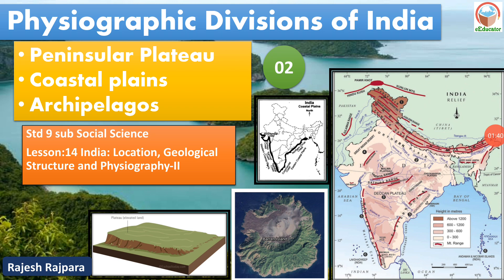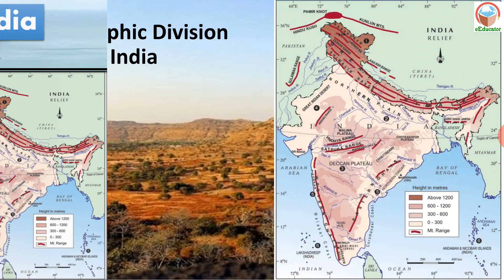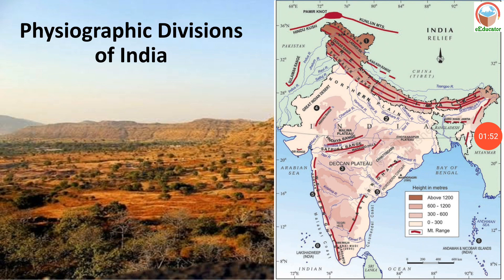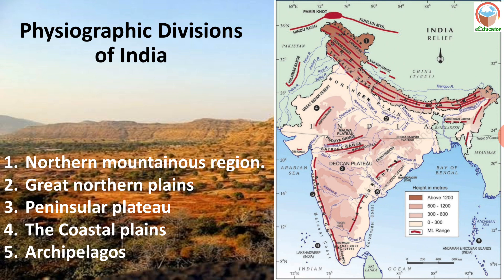In video number 1, we discussed the physiographic divisions of India - the northern Himalayan system and the great northern plains. If you have not seen that video, you can find it in the playlist of standard 9 social science. Now in this video we are going to discuss the remaining 3 divisions: Peninsular Plateau, Coastal Plain, and Islands.